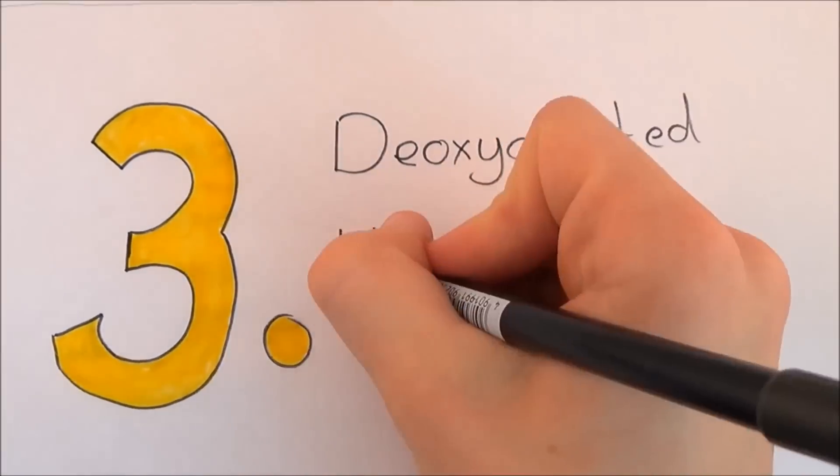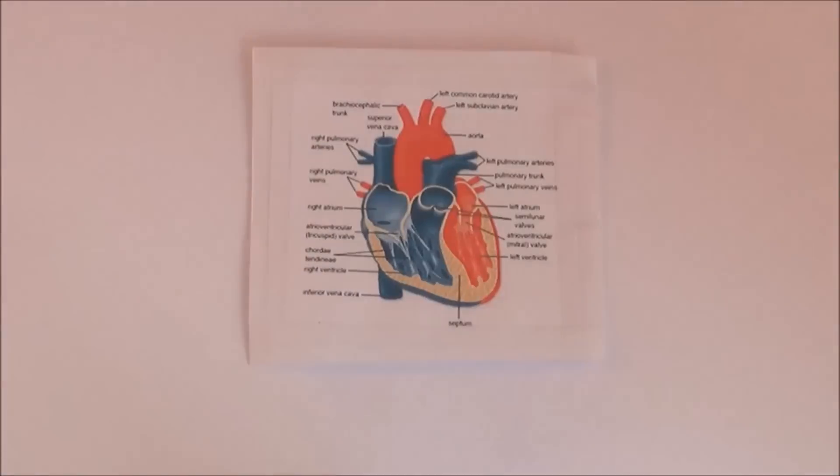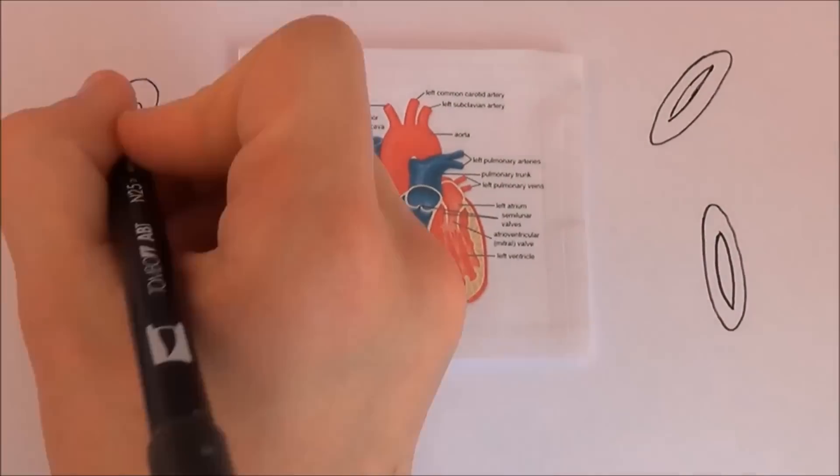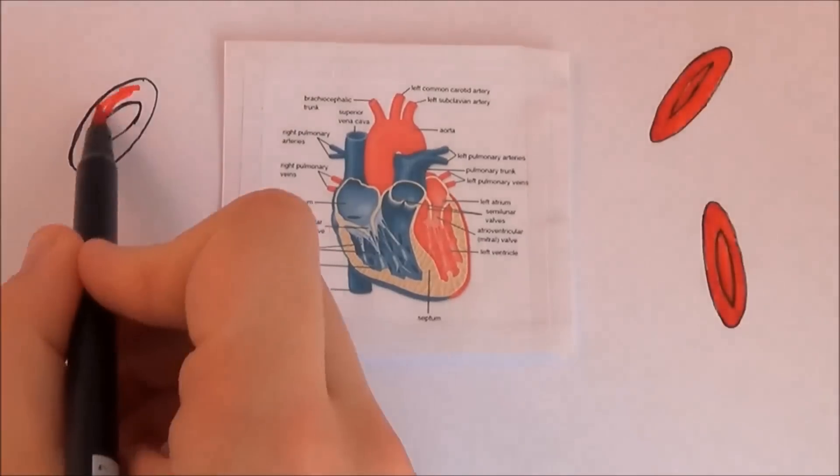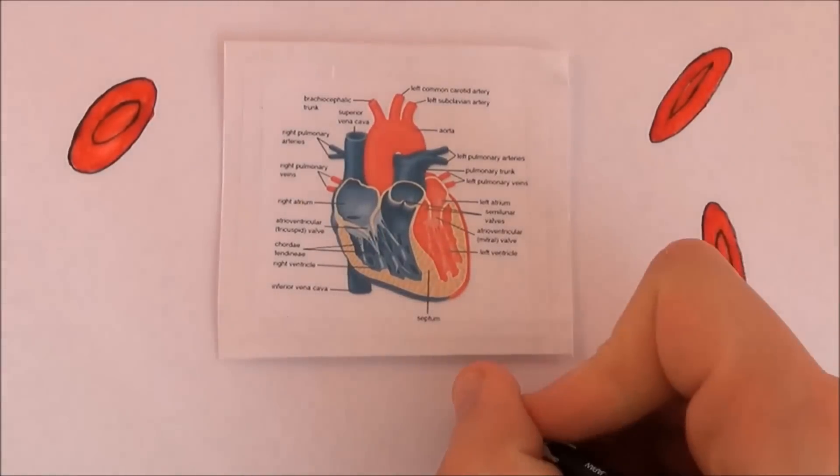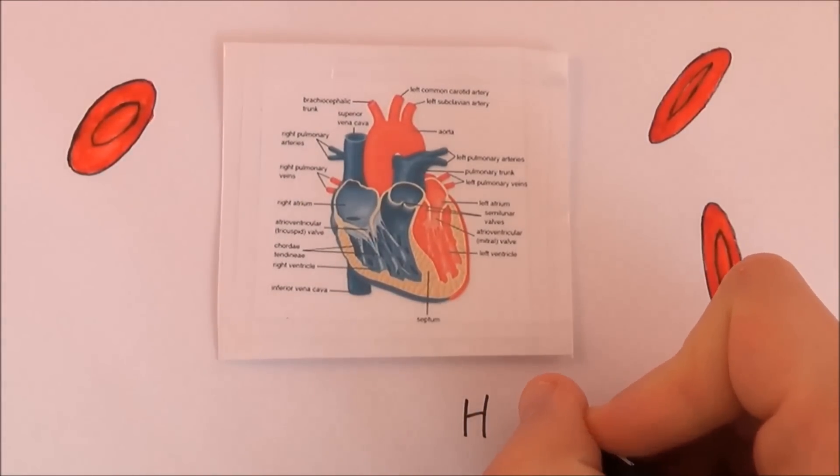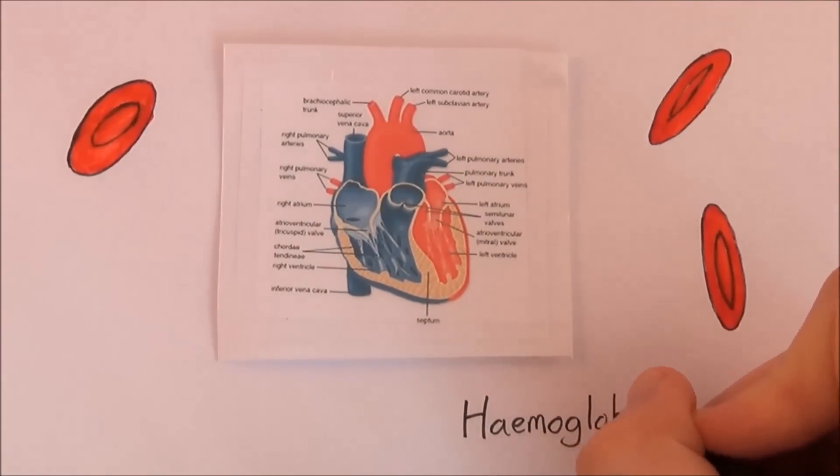Number 3. Deoxygenated blood is blue. I've spent a long time arguing with people about this. The idea behind this is that your veins look blue. In diagrams, veins are coloured in blue, however this does not mean it's true. Blood contains a lot of red blood cells, which get their colour from a protein called hemoglobin.